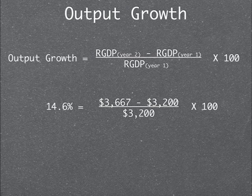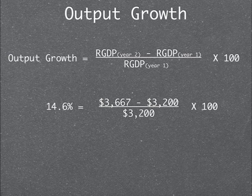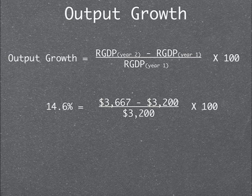Output growth equals the real GDP in year 2 minus the real GDP in year 1, divided by the real GDP in year 1, times 100. The real GDP in year 2 is 3,667 minus the real GDP in year 1, which is 3,200, divided by 3,200, times 100, equals an output growth of 14.6%.